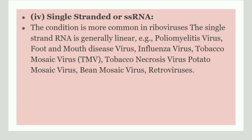The next category is single-stranded RNA, or ssRNA, which is common in riboviruses. Here the strand is generally linear. Examples include tobacco mosaic virus, influenza virus, bean mosaic virus, retrovirus, etc.